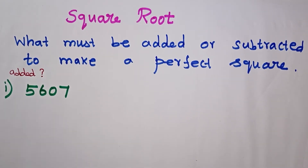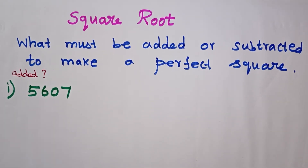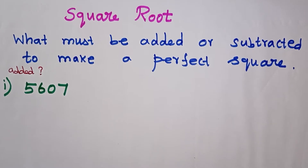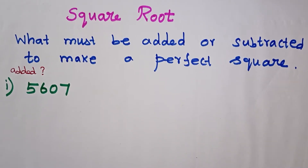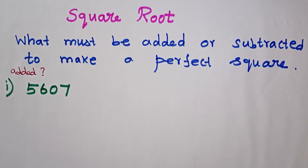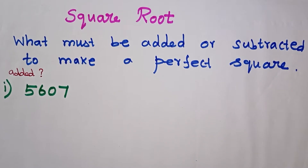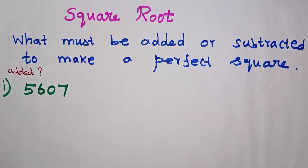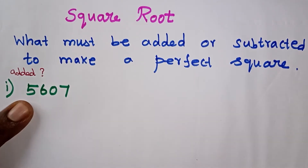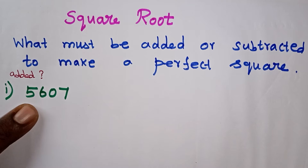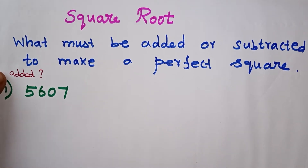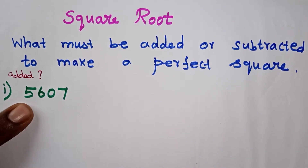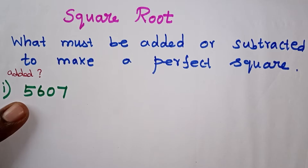What is a perfect square? If we ask the sum in prime factorization, we can use multiple divisions. How do we proceed with addition or subtraction? The number is 5607. What must be added if you want to add any number to make it a perfect square?